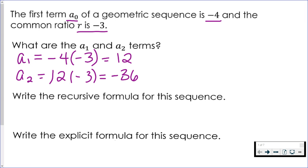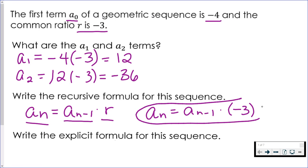The next part is asking for our recursive formula. Recursive formula is pretty easy. All we need is the common ratio. So the way that you would read this formula is you're taking the previous term, multiplying by the common ratio, to get to the next term. So all you have to do is fill in negative three, and you're done with the recursive formula.